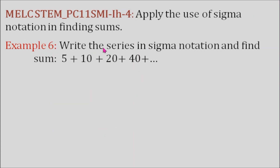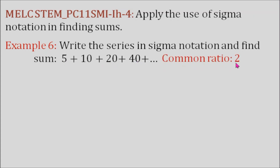Example number 6: write the series in sigma notation and find the sum. We have 5 plus 10 plus 20 plus 40 plus dot dot dot, meaning there are other terms following the same pattern all the way to infinity. Looking at the terms 5, 10, 20, and 40, there is a common ratio of 2: 5 times 2 equals 10, 10 times 2 equals 20, 20 times 2 equals 40, and so on. Since there is a common ratio of 2, this is actually a geometric series. The rule for the nth term is a sub n equals a sub 1 times r to the power of n minus 1.